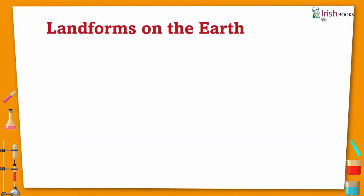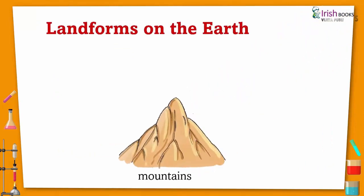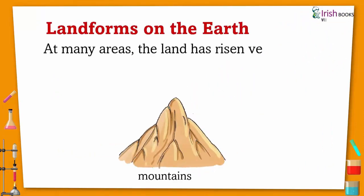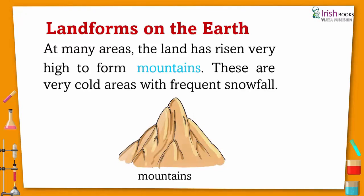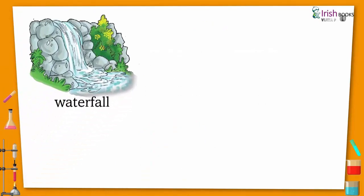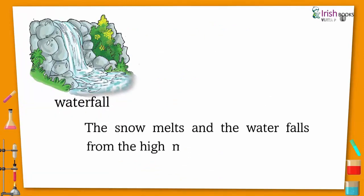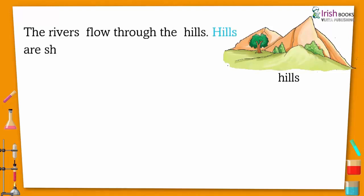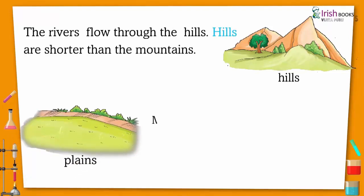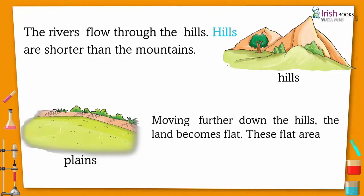Land forms on the Earth in many areas. The land has risen very high to form mountains. These are very cold areas with frequent snowfall. The snow melts and water falls from the high mountains as a waterfall. The rivers flow through the hills. Hills are shorter than the mountains.